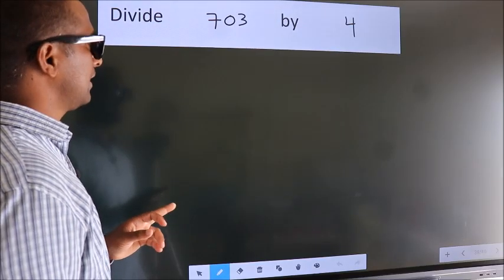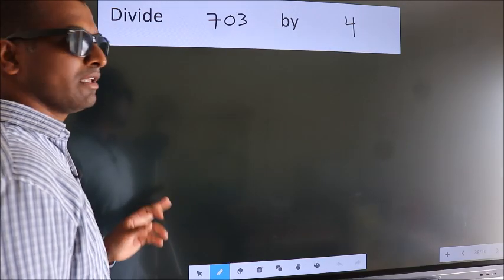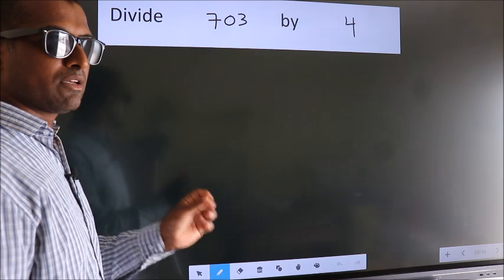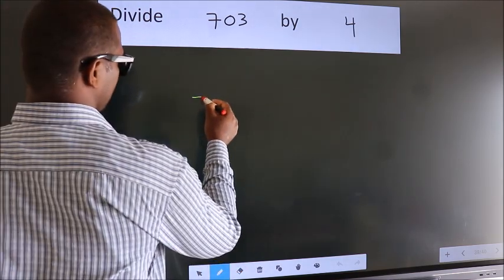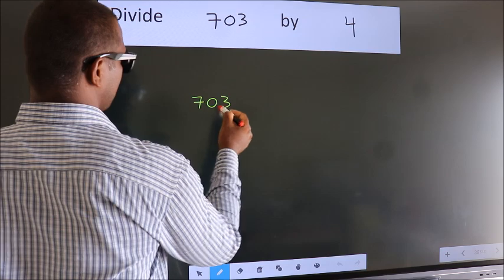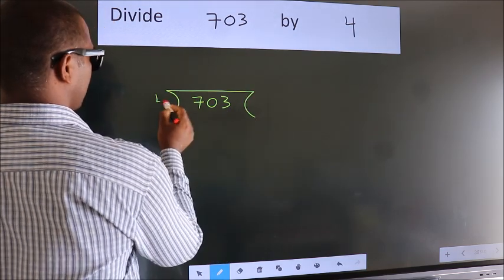Divide 703 by 4. To do this division, we should frame it in this way. 703 here, 4 here.